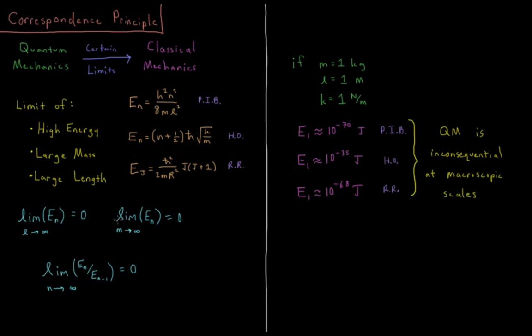And what about as the limit as mass goes to infinity, do the energy levels go to 0? Mass is again in the denominator here, so the particle in a box energy has become continuous as mass goes to infinity.